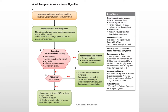For synchronized cardioversion doses: a narrow regular rhythm like SVT gets 50 to 100 joules; a narrow irregular like rapid AFib gets 120 to 200 biphasic or 200 monophasic; a wide regular — such as a conscious VTAC with a pulse — gets 100 joules; and a wide irregular gets the defibrillation dose, not synchronized. For adenosine, the first dose is six milligrams rapid IV push followed by a normal saline flush, and the second dose is 12 milligrams.